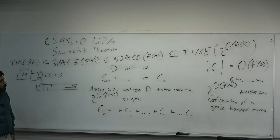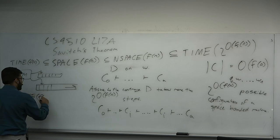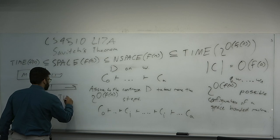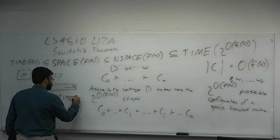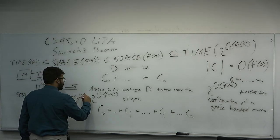So we've proven that if a deterministic machine has a space bound of f(n), it also has a time bound of 2^(O(f(n))).